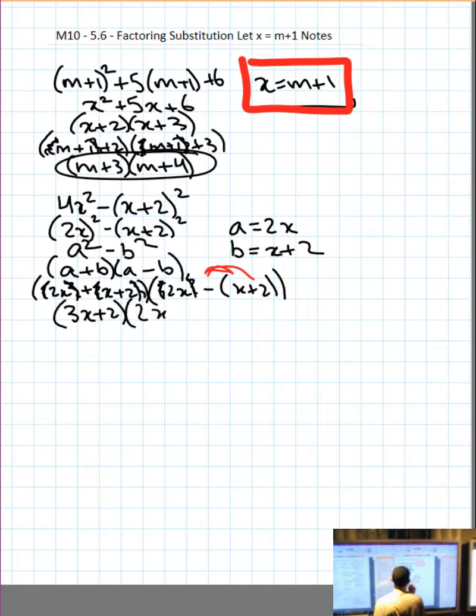Then we have a 2x, and we're going to distribute the negative, minus x minus 2. Then we're going to say 3x plus 2, and 2x minus x is x, still minus 2. Circle your answer.